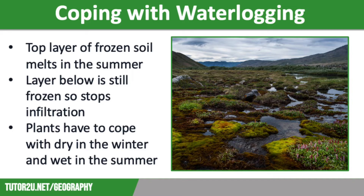Our next issue is waterlogging and poor drainage. In the summer, the top layer of soil, which was frozen over the winter, melts. However, because the lower levels of soil are still frozen, a barrier of ice prevents water from infiltrating downwards into the soil, causing widespread waterlogging. Plants have to be able to tolerate the very dry conditions of the winter and the very wet conditions of the summer. They have to be very hardy, such as mosses.